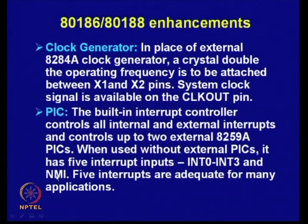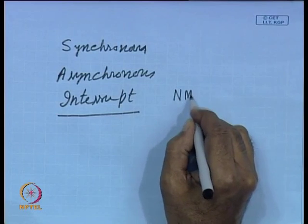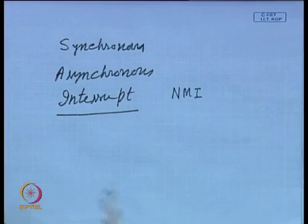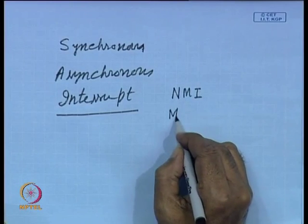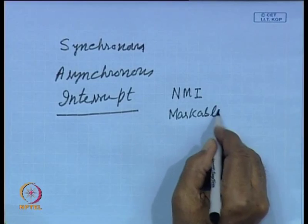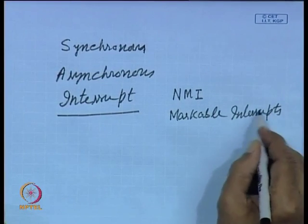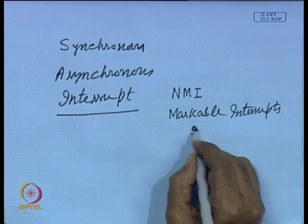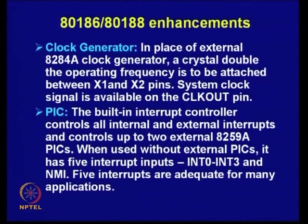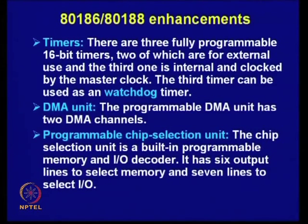Interrupt inputs can be broadly divided into two groups: non-maskable interrupts — at least one provided for emergency situations which cannot be disabled — and maskable interrupts. The number of maskable interrupts is 4 (INT0 to INT3). Five interrupts are adequate for many applications; when not sufficient, external interrupt controllers can be used. Timer counters, also required in many applications, can be used to implement watchdog timers, which are necessary in embedded systems.